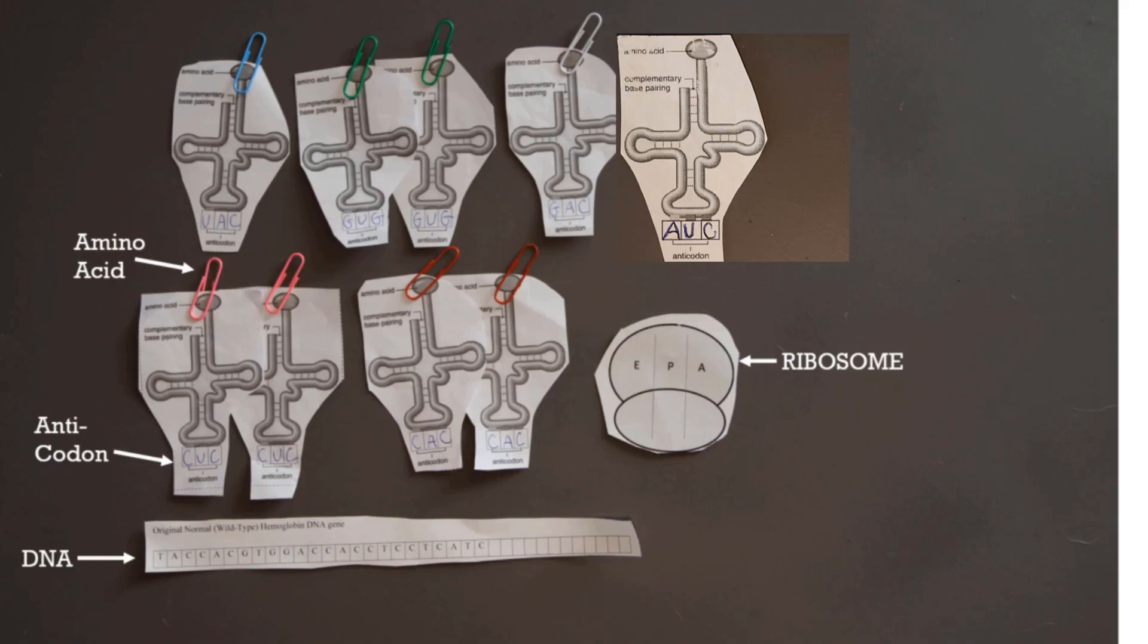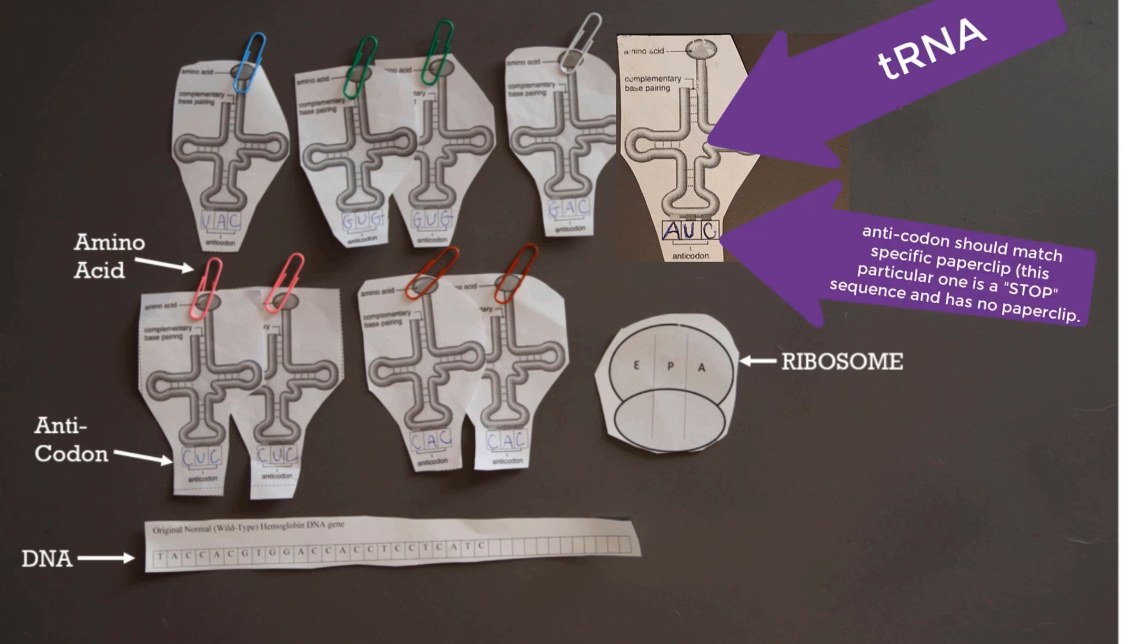First, you're going to need to cut out your DNA strand, your tRNAs, and your ribosome. Next, you'll need to label your tRNA molecules with the correct anticodon sequence, and you will need to attach the correct paper clip to the correct tRNA as shown in this picture here.